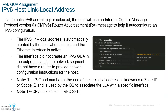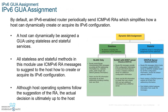On the client side, the host will use the IPv6 Router Advertisement (RA) to help in auto-configuration. The percent sign and number at the end of the link-local address is known as the zone or scope ID. This is used by the operating system to associate the LLA with a specific interface. Everything after the percent sign and number is not something we need to worry about.